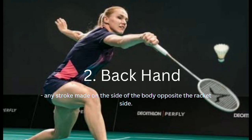Number two: backhand. A stroke made on the side of the body opposite the racket side. Look at the background picture — that is the backhand.